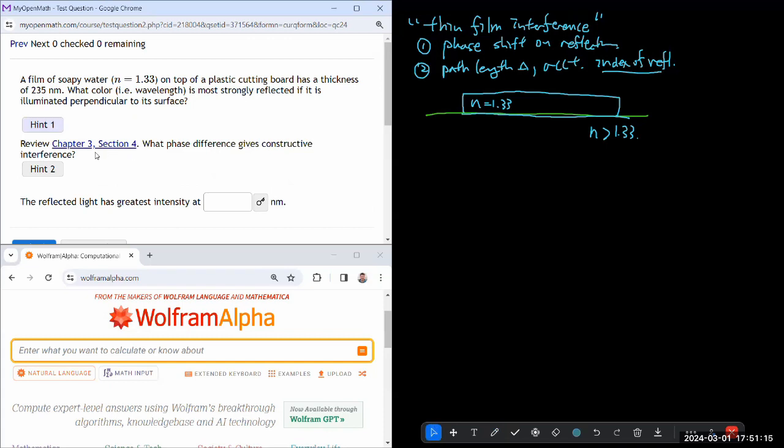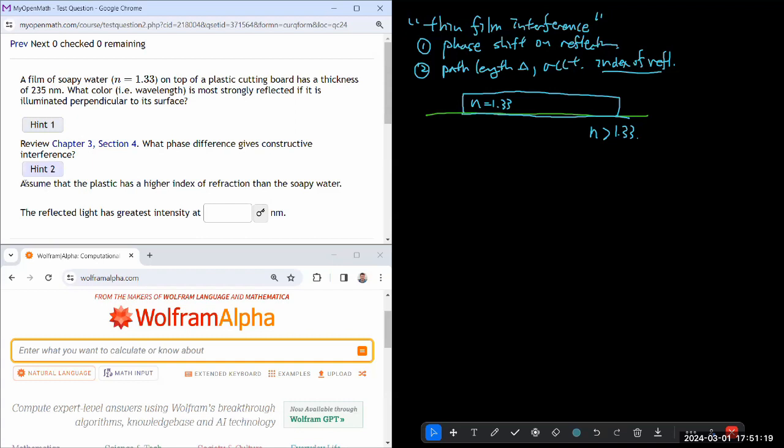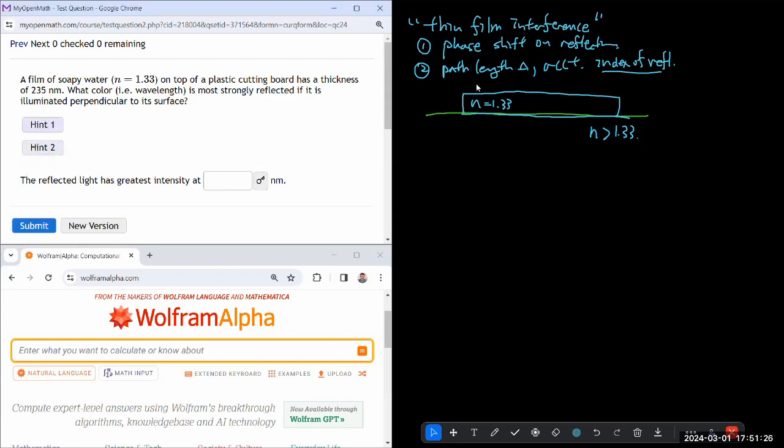And in thin film interference, you have to consider and worry about two things. One is any phase shift on reflection. And the second thing is path length difference accounting for index of refraction. So I think that's what the hint will probably talk about if I open that up. What phase difference gives concern? Yeah, we do have to worry about that. Assume that the plastic has a higher index of refraction. Yeah, that's what I was going to assume anyway. So hint doesn't really tell you these things. Well, it's fine. There's a textbook section that does thin film interference. Take a look at that.